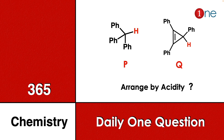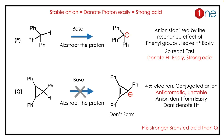Welcome to One Chemistry. This is the 365 Chemistry Series — one daily question for you. Here, P and Q are two different compounds given which have acidic hydrogen. P has acidic hydrogen with three phenyl groups. Q has acidic hydrogen in the cyclopropane ring with three phenyl attachments. You have to find which one among the two is more acidic.